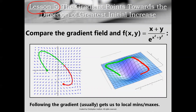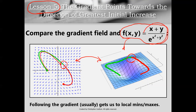Let's go back to lesson five and look at a familiar example. Here's a function f(x, y) = (x + y) / e^(x² + y²). One thing we liked to do with gradient fields was look at the correspondence between a gradient field and a plot of the associated surface f(x, y). In both plots, if we follow the direction of greatest initial increase — the gradient vectors — we eventually approach a sink, which corresponds to a local maximum on our surface; in this case, it's actually a global maximum. That skill of understanding the correspondence between the gradient field plot and the original surface plot is really useful.